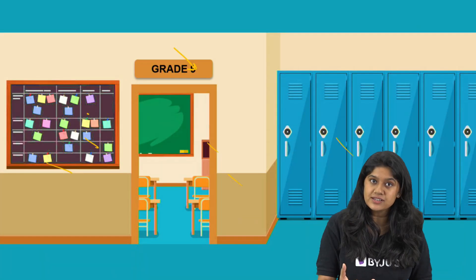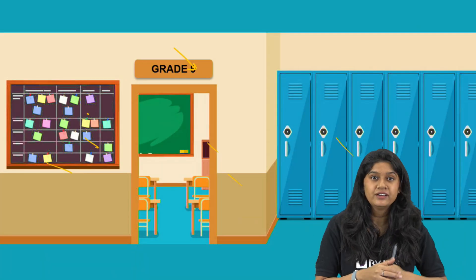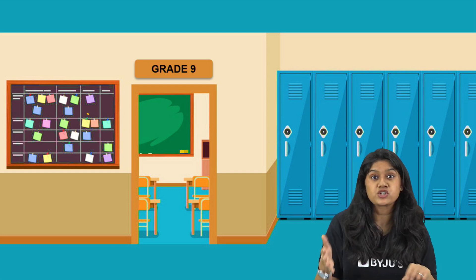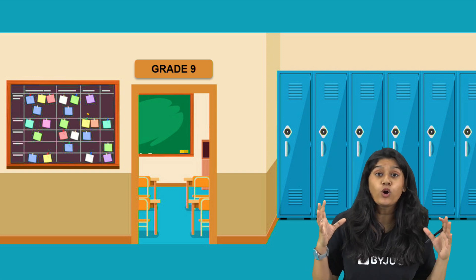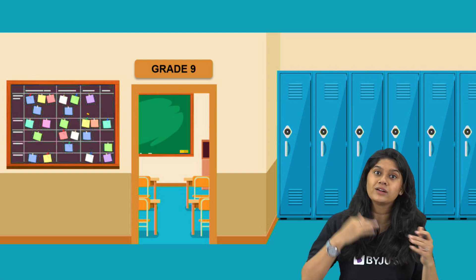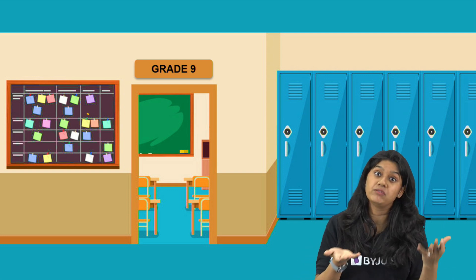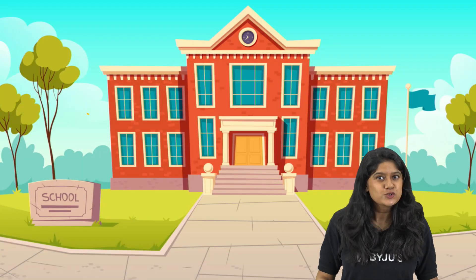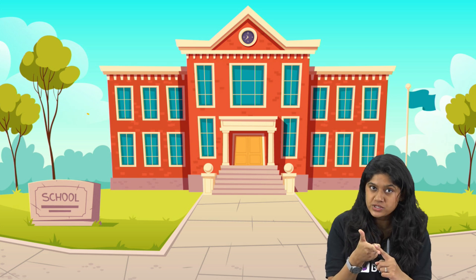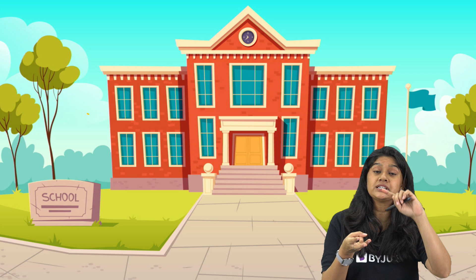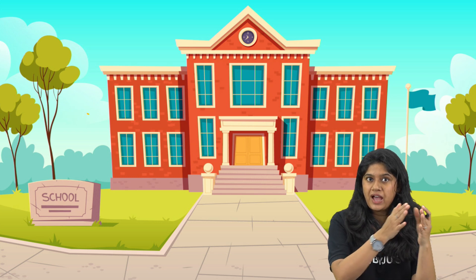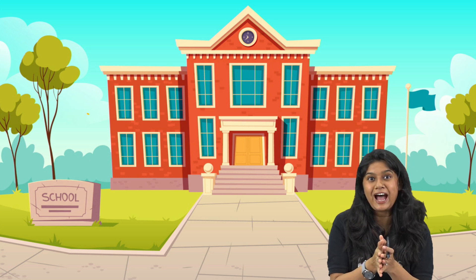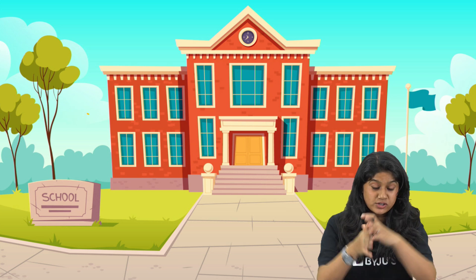Then of course we have the class. We have different classes altogether — maybe 9th grade with different sections. All of those sections together, not just 9th grade but from 1st to 12th, will make up the school. So we started with the cell, then tissues, then organs, organ systems, and the organism. In the school analogy: students form a classroom, different sections make a grade, and all grades make the school — the same flow.